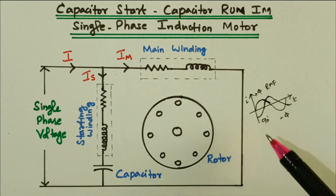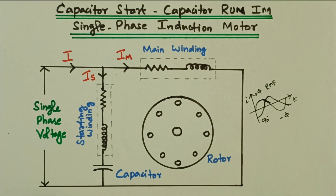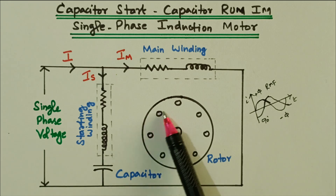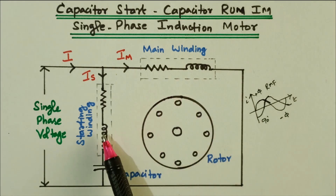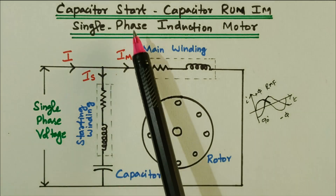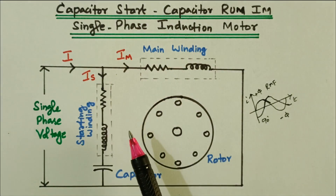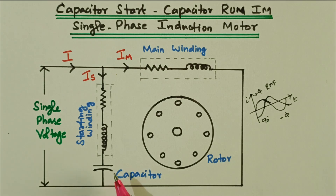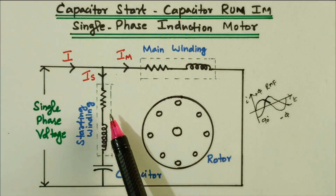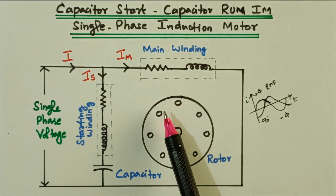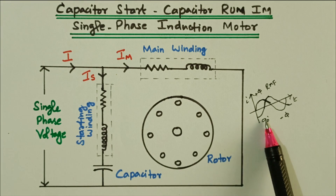Similar to this, we will see the capacitor start capacitor run induction motor. The circuit diagram has a rotor (rotating part) and a stator. We have two windings: main winding and starting winding. In the previous type — capacitor start induction motor — the capacitor is disconnected after the motor reaches running speed. But here we are not disconnecting it, so it is called starting winding and running winding — both remain connected.